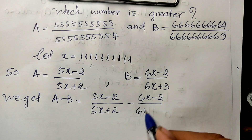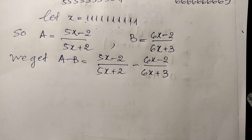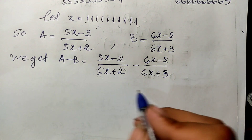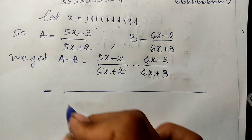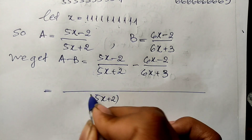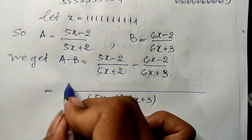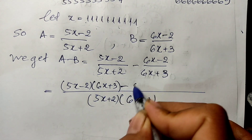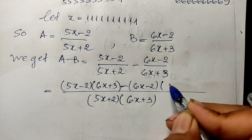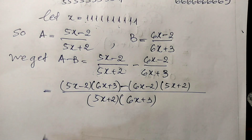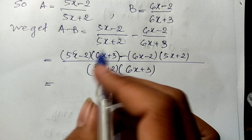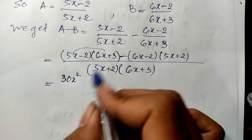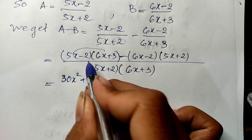I take the denominator as these two multiplied together, so the common denominator is (5x + 2)(6x + 3). The numerator becomes (5x − 2)(6x + 3) minus (6x − 2)(5x + 2). Expanding, I get 30x squared plus 15x minus 12x minus 6.